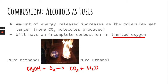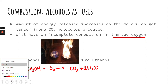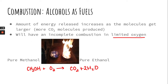To balance the equation: we have one carbon on each side, and four hydrogens, so we put a 2 in front of H2O. That gives us two plus two oxygens for four on the product side, but on the reactant side we only have three.